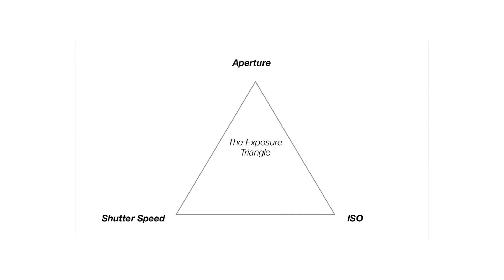So that's what stops of light are — they can be determined by changing any of those three factors: aperture, the main one we're talking about in this video series; shutter speed, which is the duration of time; and ISO. In the next lesson, we're going to be talking about depth of field, and we're going to have a lot of fun.